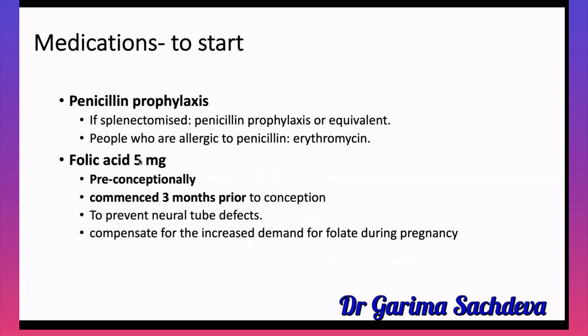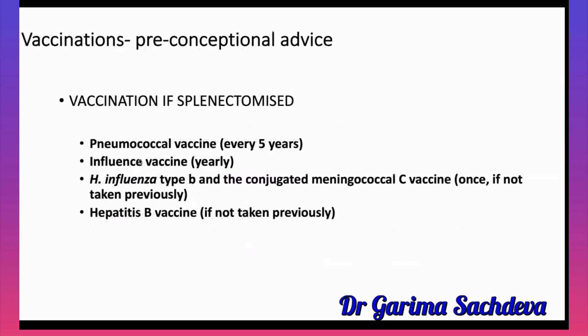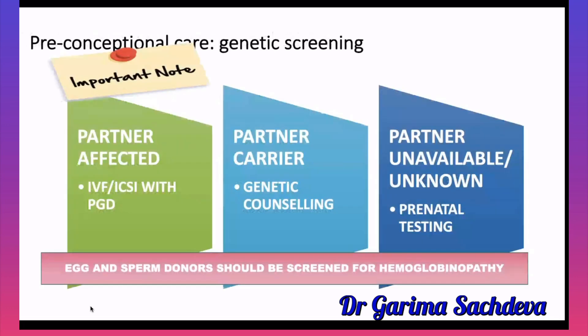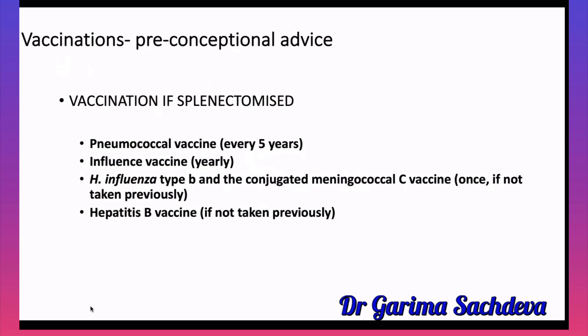Medications to start in the preconception period: if the patient is splenectomized, give penicillin prophylaxis; if allergic to penicillin, give erythromycin. Folic acid must be commenced three months prior to conception and given for the first three months. Vaccinations are also the same: pneumococcal vaccine every five years, influenza yearly, Haemophilus influenzae B and meningococcal C once in a lifetime, and hepatitis B once in a lifetime if not previously given.